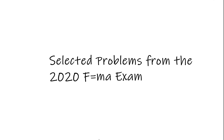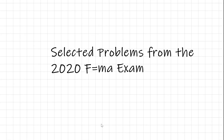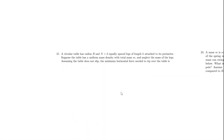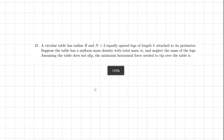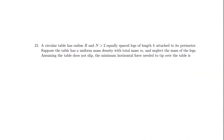I just picked three interesting problems from it and let's go over them. In problem 21: a circular table has radius r and greater than two equally spaced legs of length h attached to its perimeter. The table has a uniform mass density and total mass m. Neglect the mass of the legs. Assume the table does not slip, and find the minimum horizontal force to tip the table.